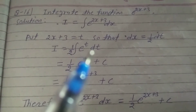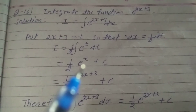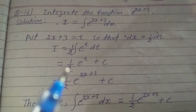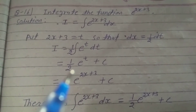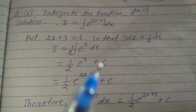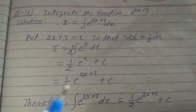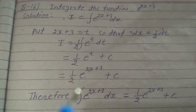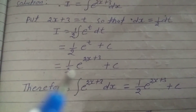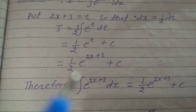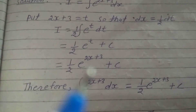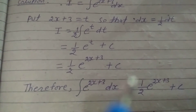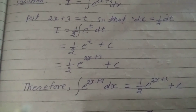The integration of e to the power t is e to the power t, so I is equal to 1 upon 2 times e to the power t plus c. Substituting back the value of t, I is equal to 1 upon 2 times e to the power 2x plus 3 plus c.